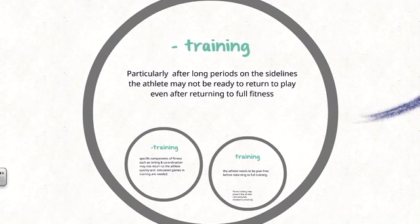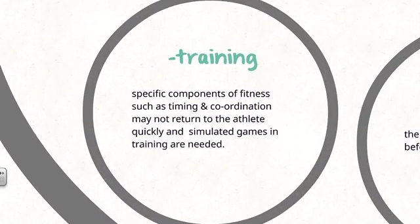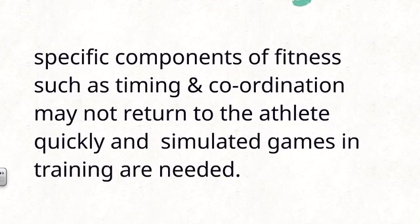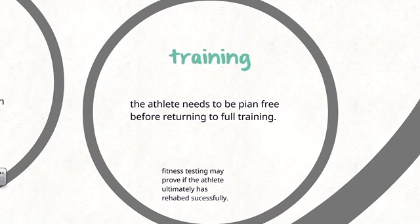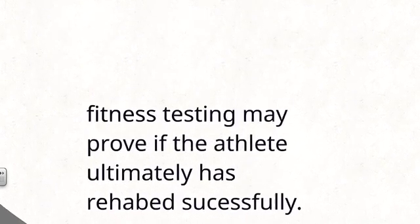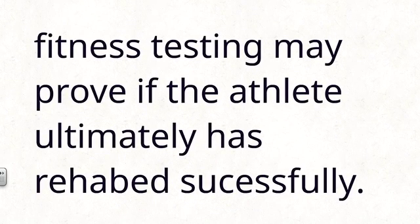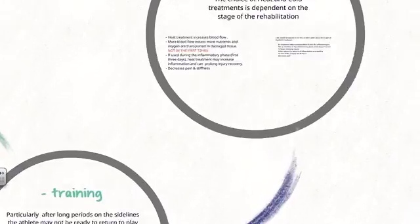The next dash point is training. After long periods on the sideline — such as for an ACL injury where the athlete can be out for up to 12 months — the athlete may not be ready to return to play even after returning to full fitness. Some components of fitness such as timing and coordination may not return as quickly as cardiovascular fitness, so special training is needed. This often includes simulated games, and at a professional level may mean returning in reserve grade before first grade. The athlete needs to be pain-free before returning to full training, and fitness tests may confirm that rehabilitation has been successful.